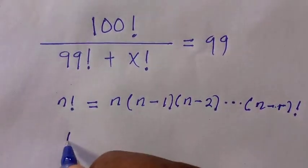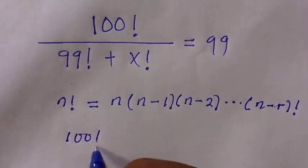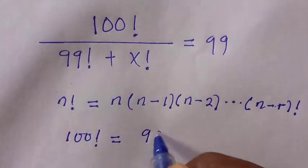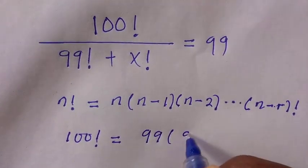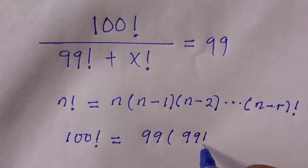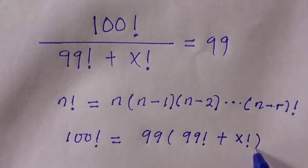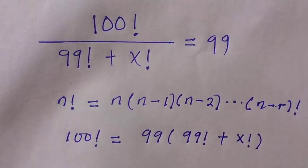We cross multiply and we have 100 factorial equals 99 bracket, 99 factorial plus x factorial.